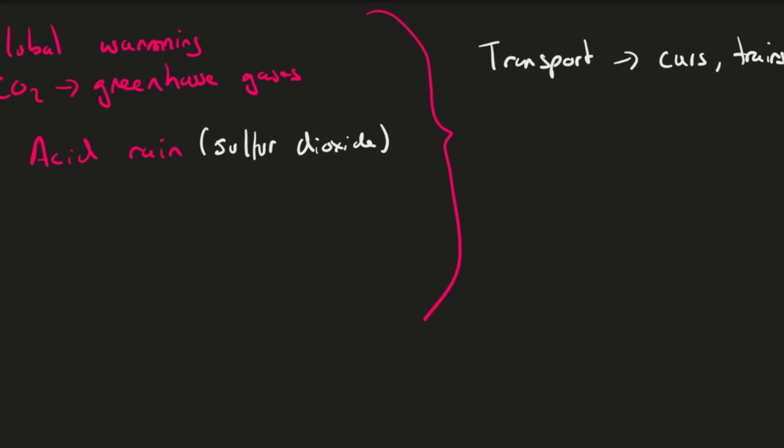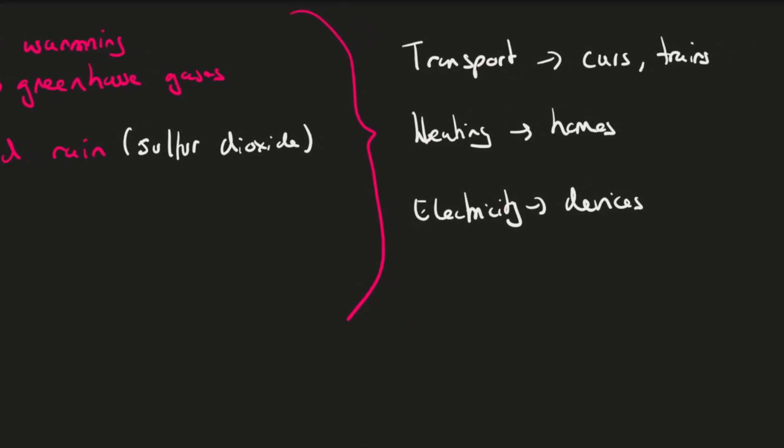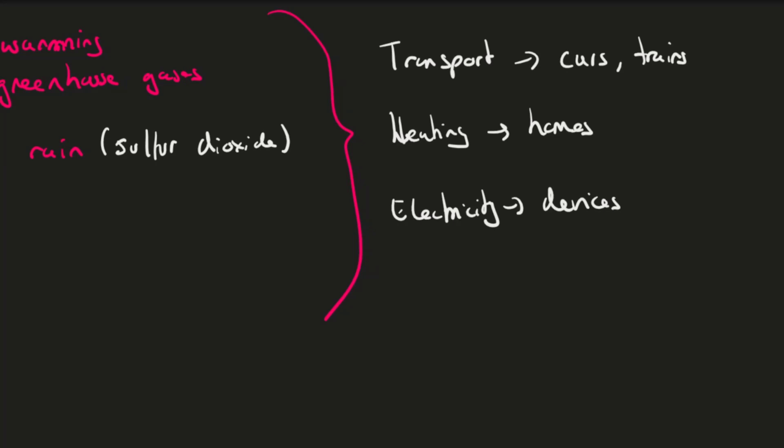The next resource or the next use that we'd have for these resources is heating. So if you think about it, we need to heat all of our homes, we need to heat all of our buildings. And so we need a fuel to burn or something that will produce heat to actually generate the heat that we need to keep ourselves warm. And the last one, and then probably the most common one, is to generate electricity. So to power all of our electrical devices and things like that, we do need electricity. And so we need one of these resources to generate that electricity for us.